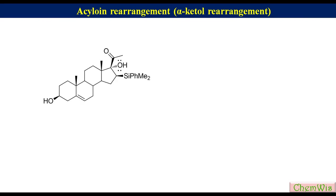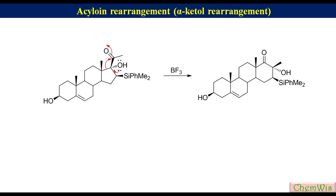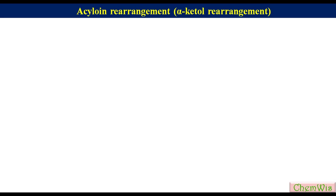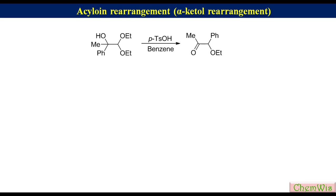Steroidal ketols have been subjected to rearrangement conditions to give steroids of different ring sizes, and these rearrangements often proceed with a high degree of stereocontrol. Acetyl-protected alpha hydroxy aldehydes in the presence of pyridinium sulfonic acid undergo acyloin-type rearrangement to produce alpha alkoxy ketones. For example, 1,1-diethoxy-2-phenylpropan-2-ol, when heated in benzene in the presence of pyridinium sulfonic acid, produces 1-ethoxy-2-phenylpropan-2-one.